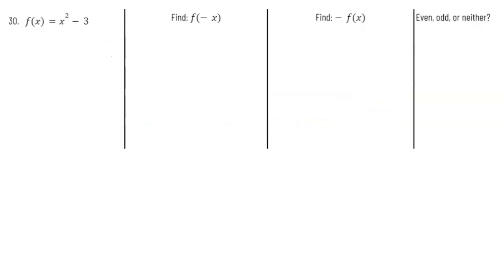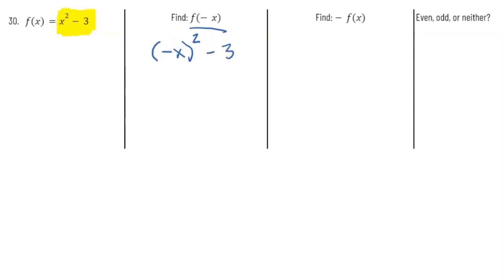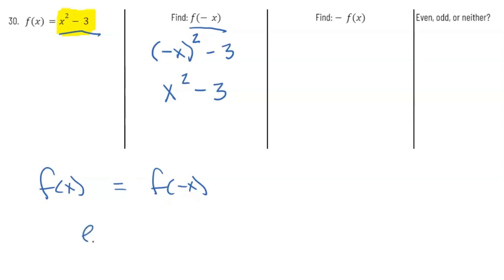Let's look at the function x² - 3 and determine if it's odd, even, or neither. We already know f(x) = x² - 3. When we plug in -x, we get (-x)² - 3. Since squaring a negative always gives a positive, (-x)² = x², so f(-x) = x² - 3. We can see that f(x) equals f(-x), which means this looks like an even function.